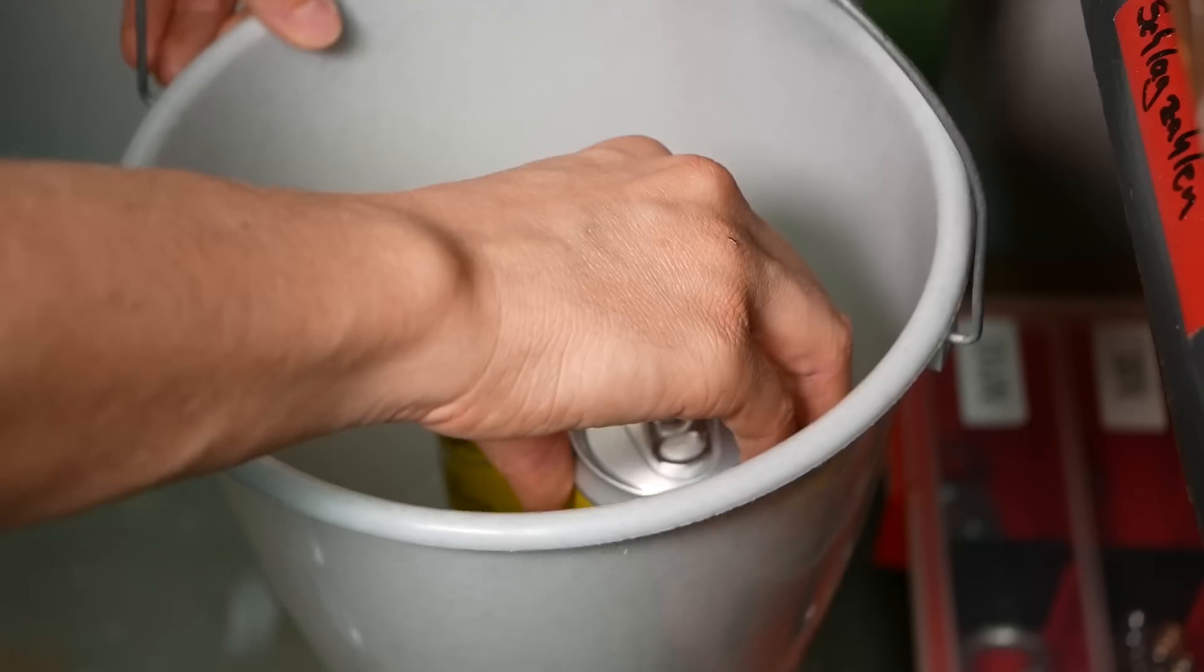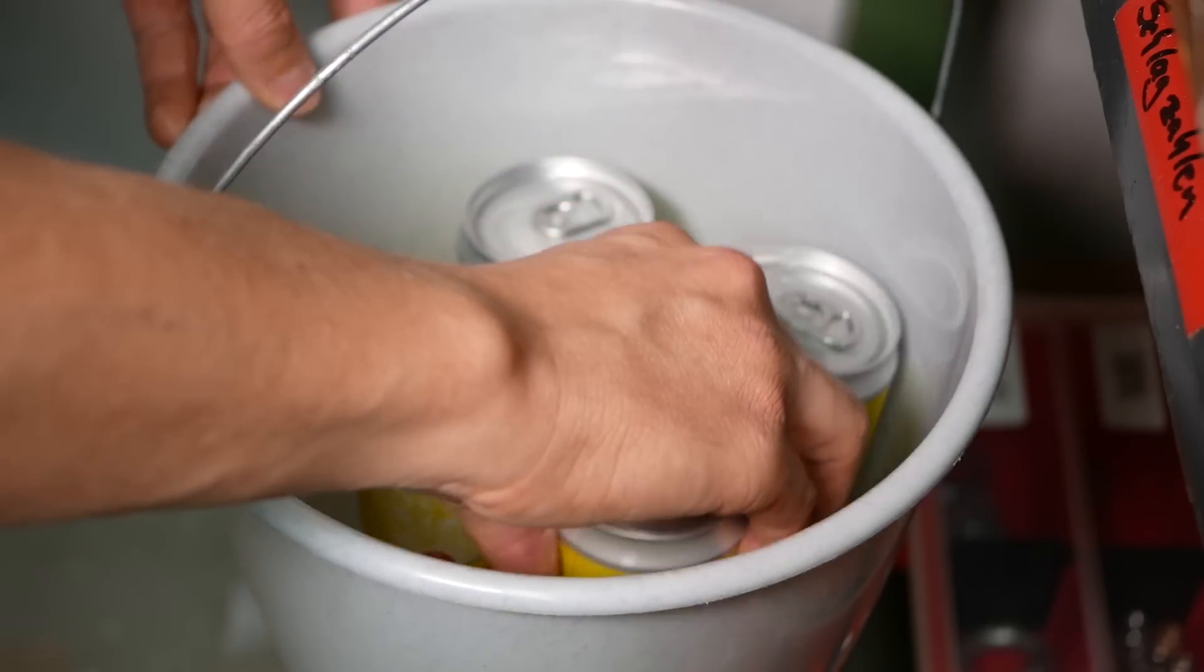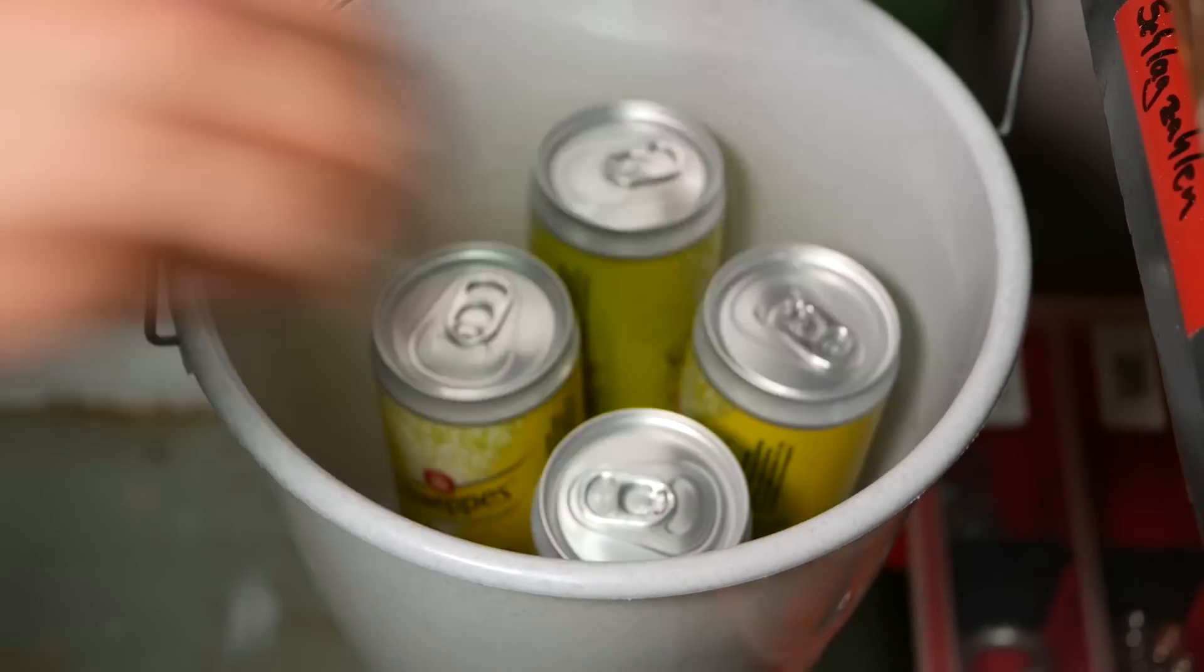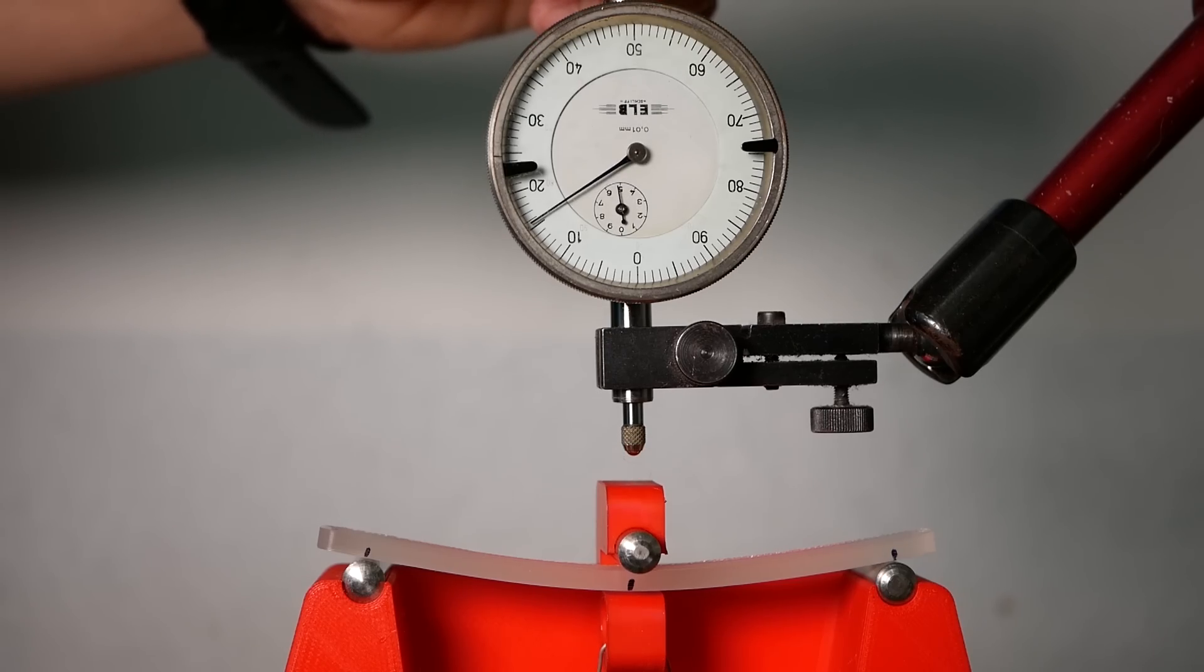So I always added a can, noted the deflection, and then added another one up to 4, which worked very nicely. The only problem was the polypropylene sample that was so compliant that measurements were hard to make and I had to stop after the addition of two cans.